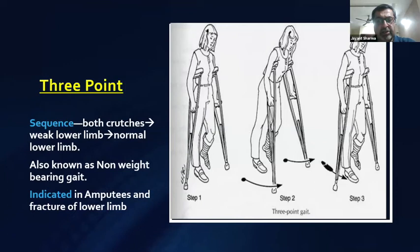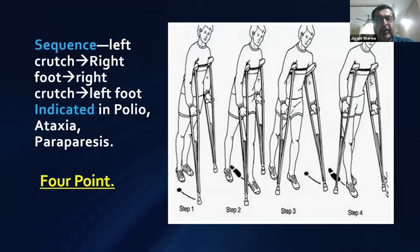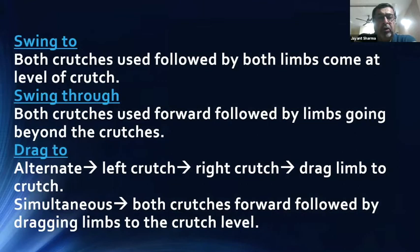In the three-point gait, the sequence is both crutches forward, followed by the weak limb, then the normal limb. It is also known as the non-weight-bearing gait and is indicated in all fracture cases and amputees. In the four-point gait, the sequence is left crutch, right foot, right crutch, left foot. It is indicated in polio and paraplegia.